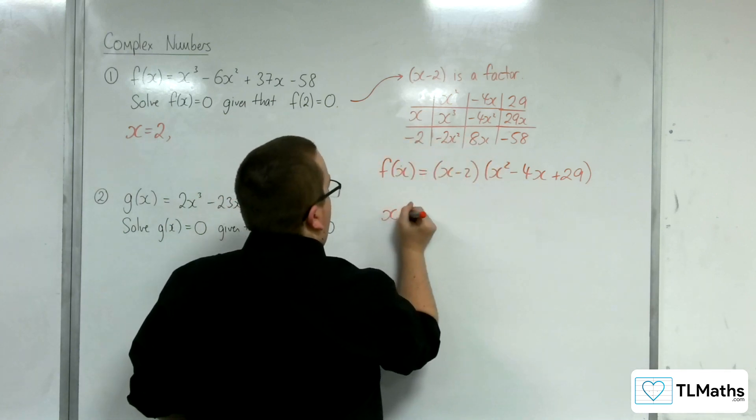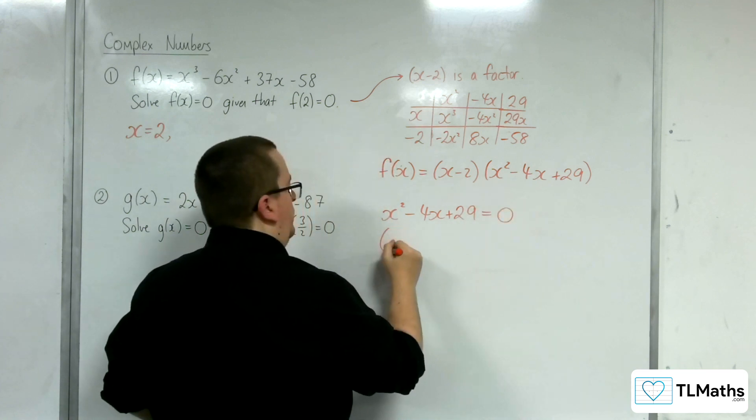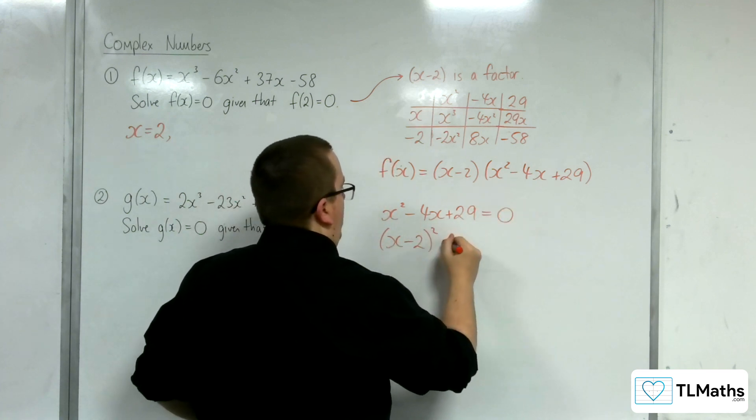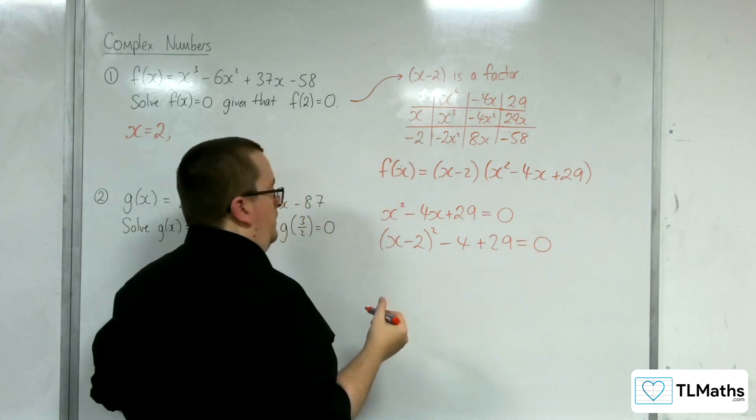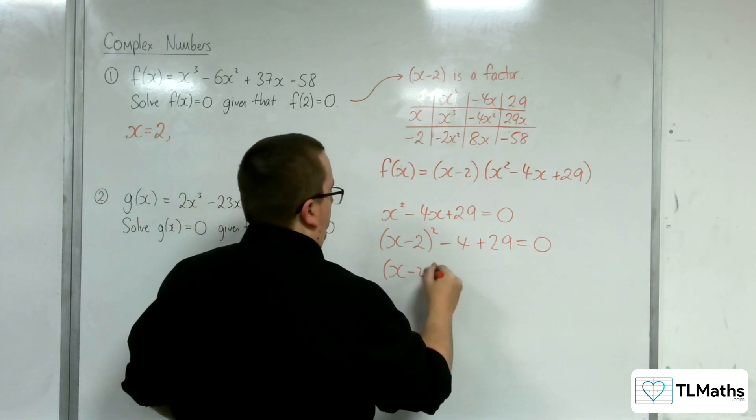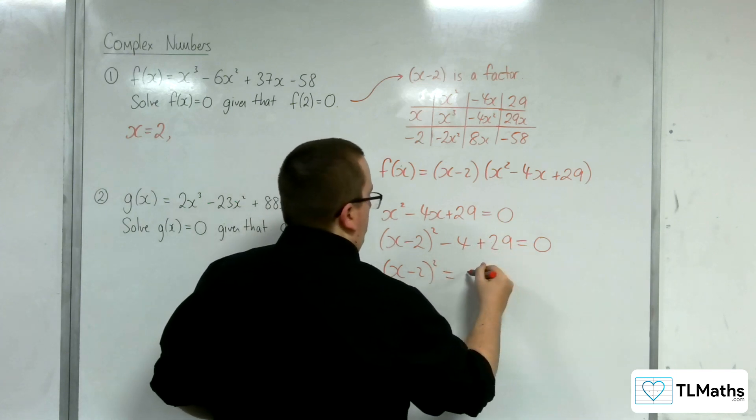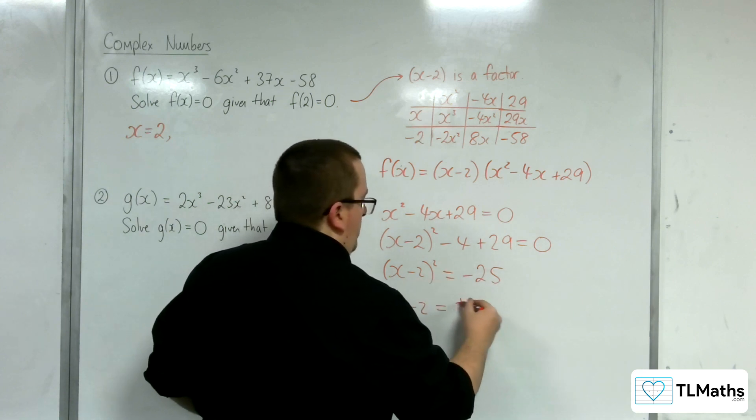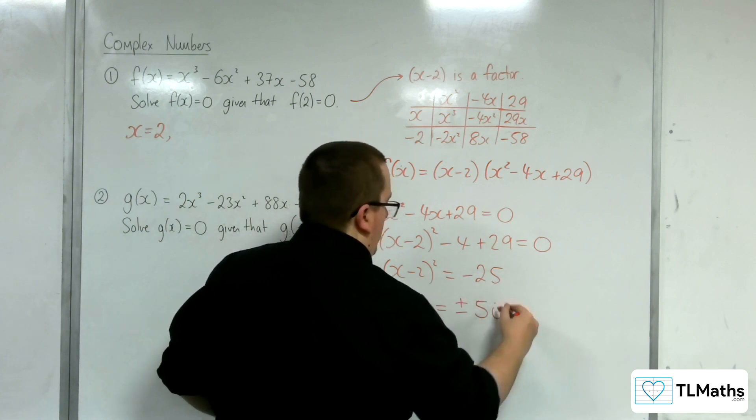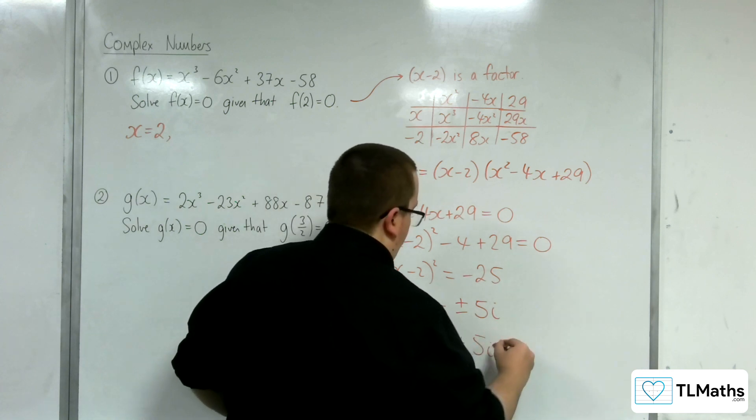So, I look at x² - 4x + 29 = 0. I'm going to complete the square on that, like so. So, I get (x - 2)² is equal to, well, that's going to be 25, so -25. Square root both sides, we get ±5i. And so, x = 2 ± 5i.